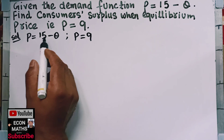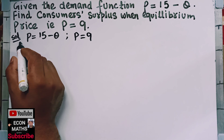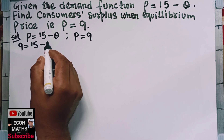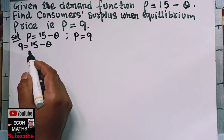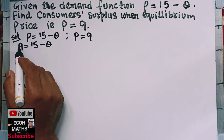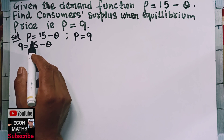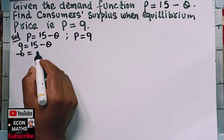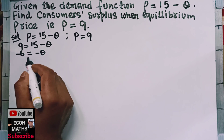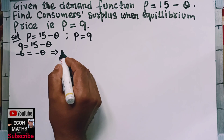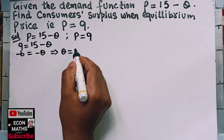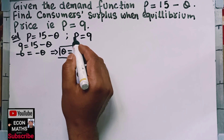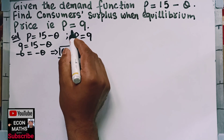So, put the value of P in this demand function — this will become 9 is equal to 15 minus Q. Now, transposing to the LHS, this will become 9 minus 15, that is minus 6 is equal to minus Q, or minus and minus will get cancelled. Therefore, Q is equal to 6. This equilibrium quantity is 6 and equilibrium price is also given, that is 9.